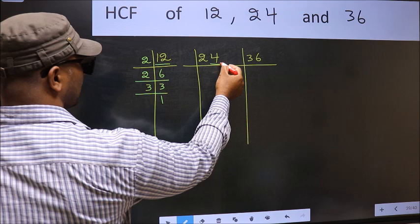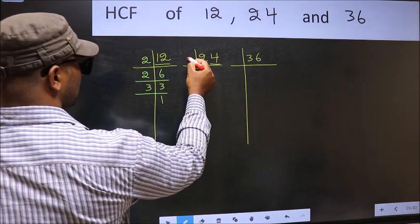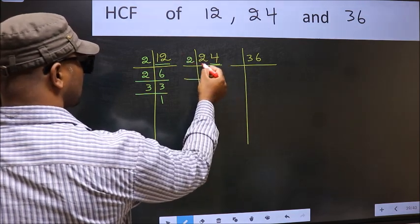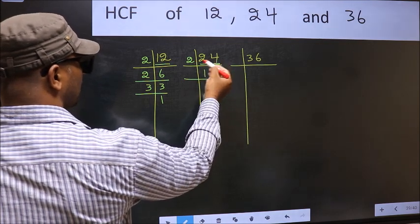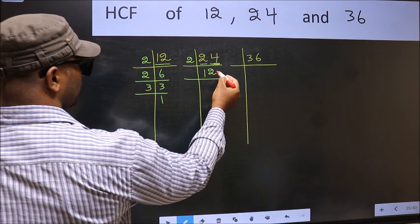Now the other number. Last digit 4, even. So take 2. First number 2. When do we get 2 in 2 table? 2, 1 is 2. The other number 4. When do we get 4 in 2 table? 2, 2 is 4.